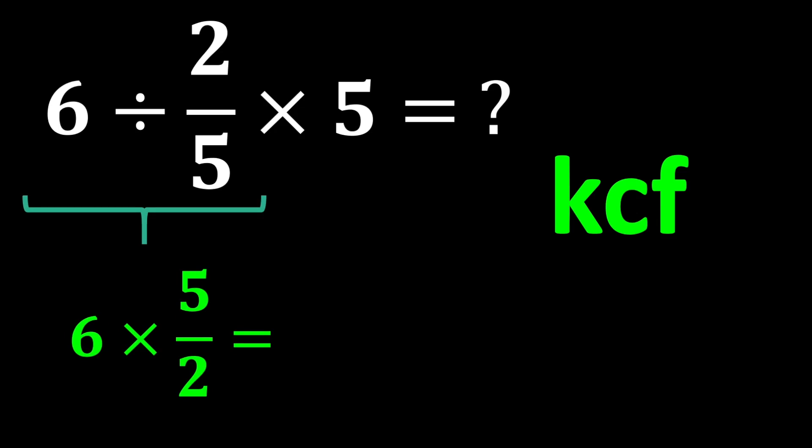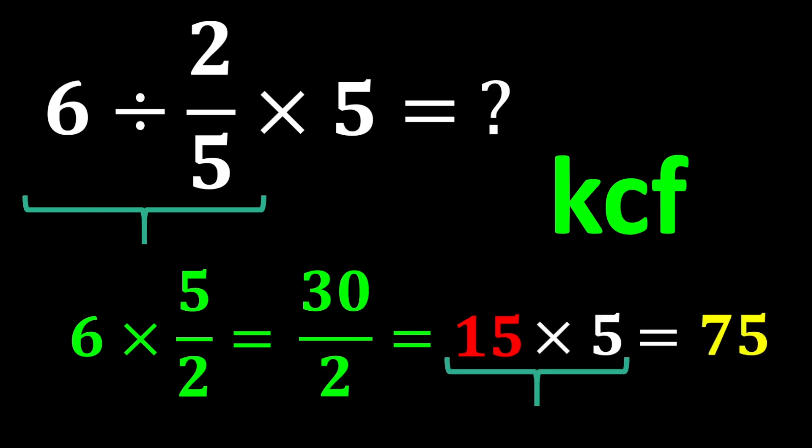Therefore, the expression 6 divided by 2 over 5 becomes 6 multiplied by 5 over 2, which is 6 multiplied by 5 is 30, 30 divided by 2 is 15. Finally, 15 multiplied by 5 gives 75. The correct answer is 75, not 3.